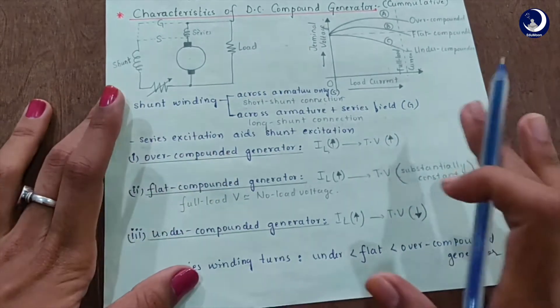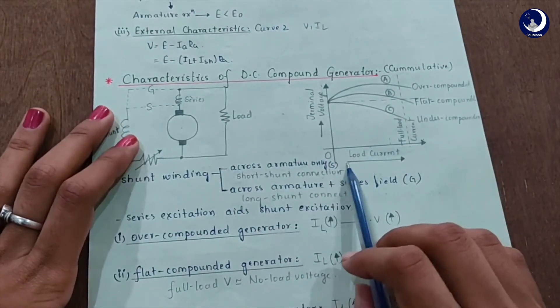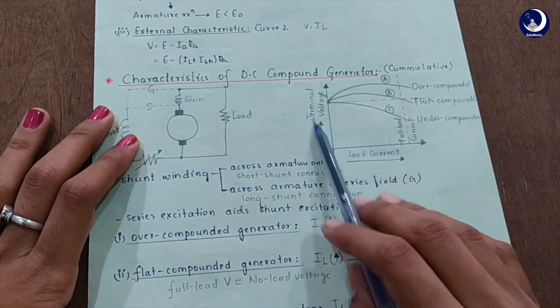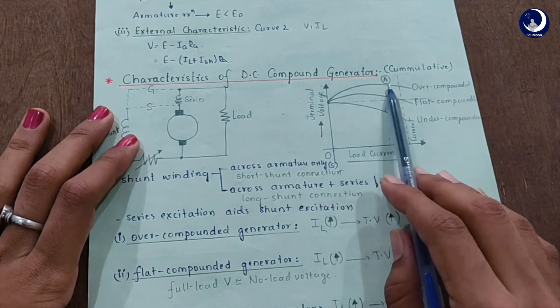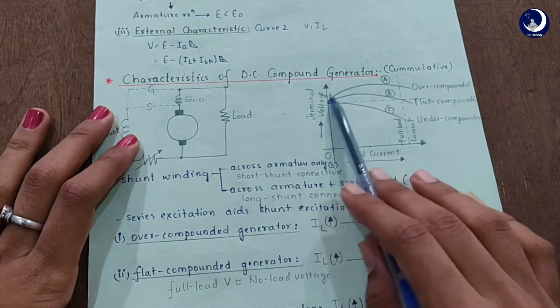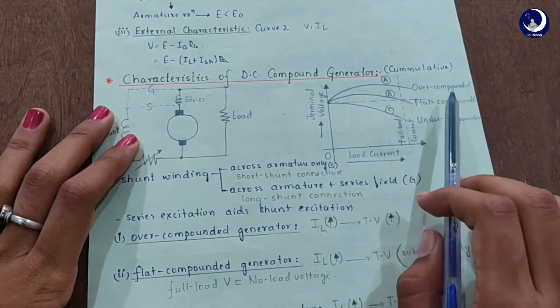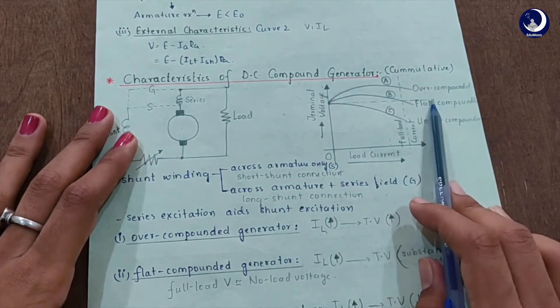As you can see here, as the load current increases, the terminal voltage curve is also increasing — this is curve A on the graph, representing the over-compounded generator.